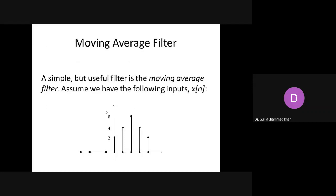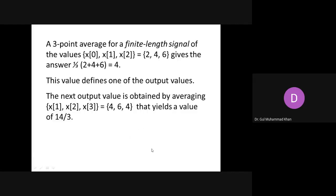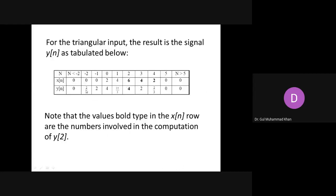Looking at the diagram: starting at minus two, the average is zero plus zero plus two divided by three, giving two-thirds. Moving to the next point: two plus four plus zero divided by three equals two. Then two plus four plus six equals twelve, divided by three gives four. Then four plus six plus four equals fourteen, giving fourteen-thirds. So the table shows values: two-thirds, two, four, fourteen-thirds, and so on — these are the moving averages.